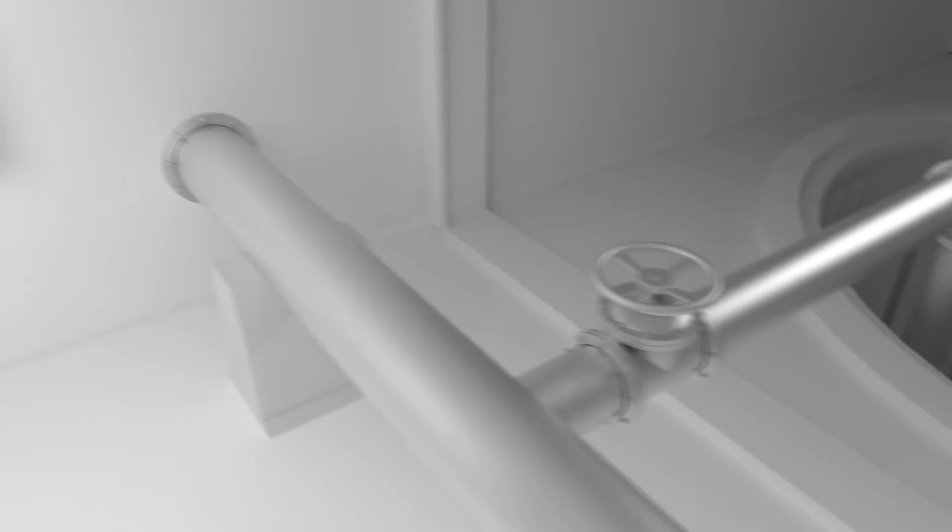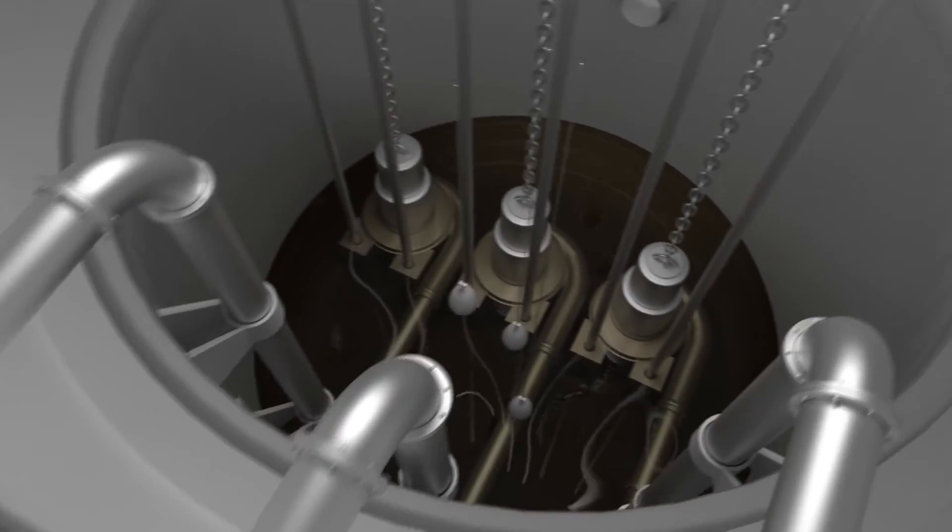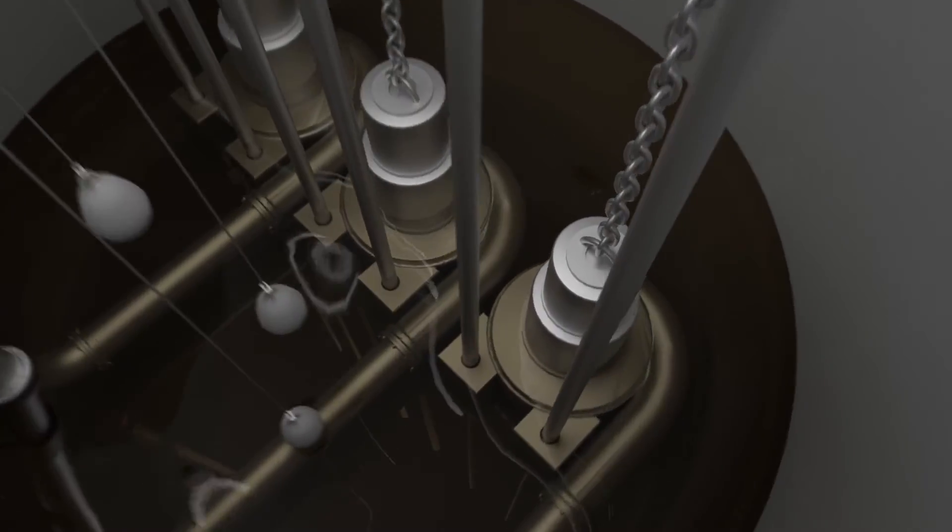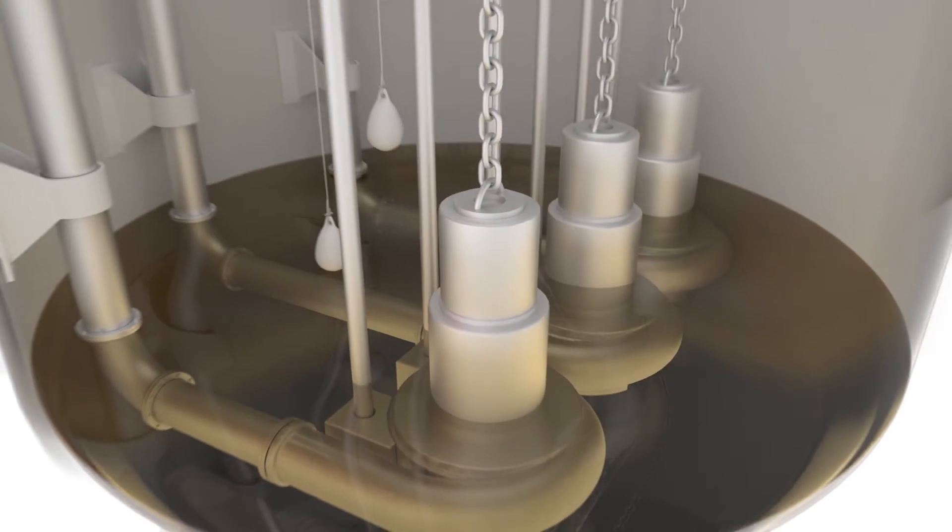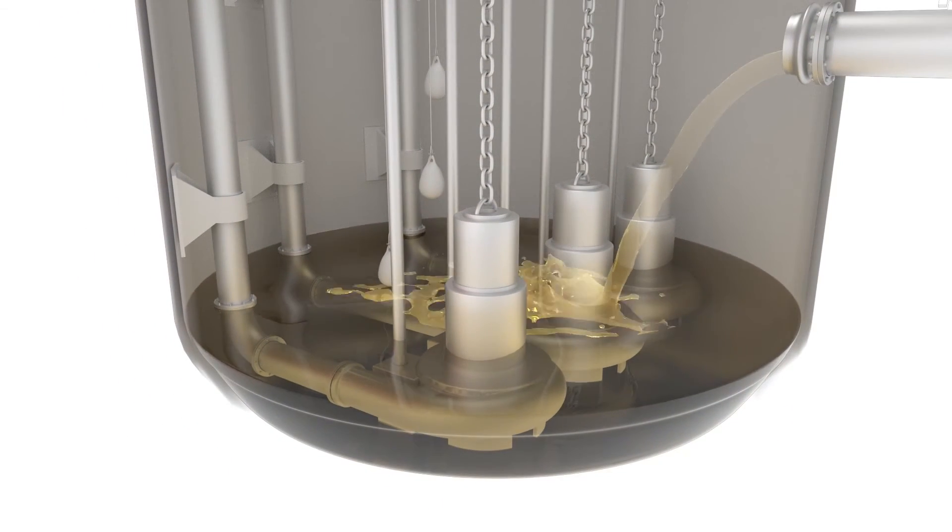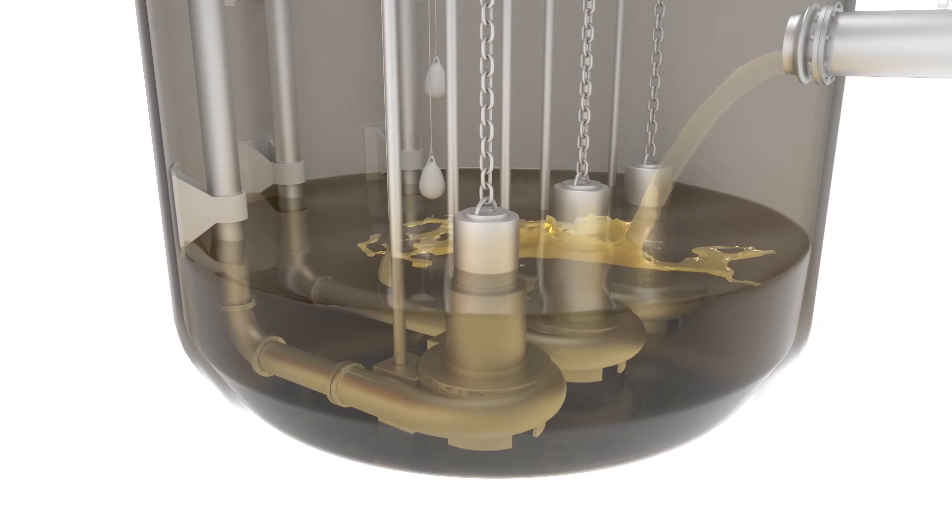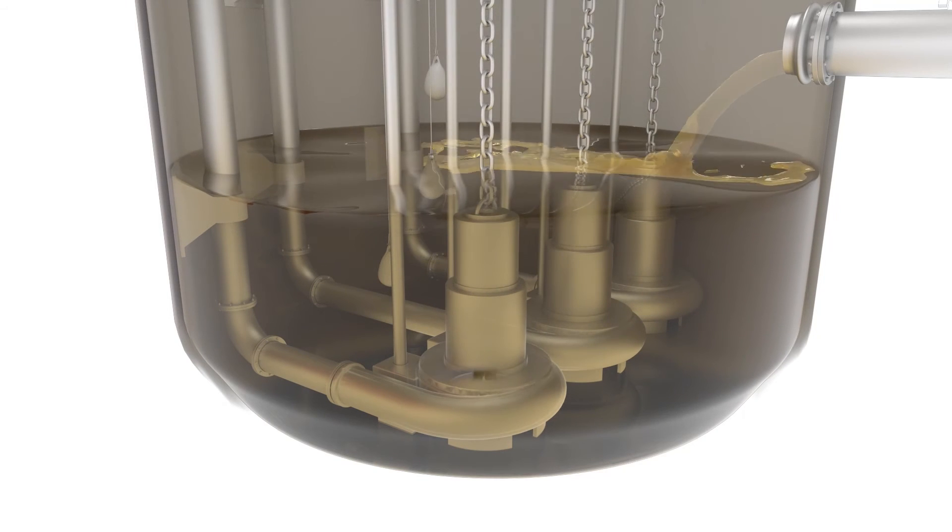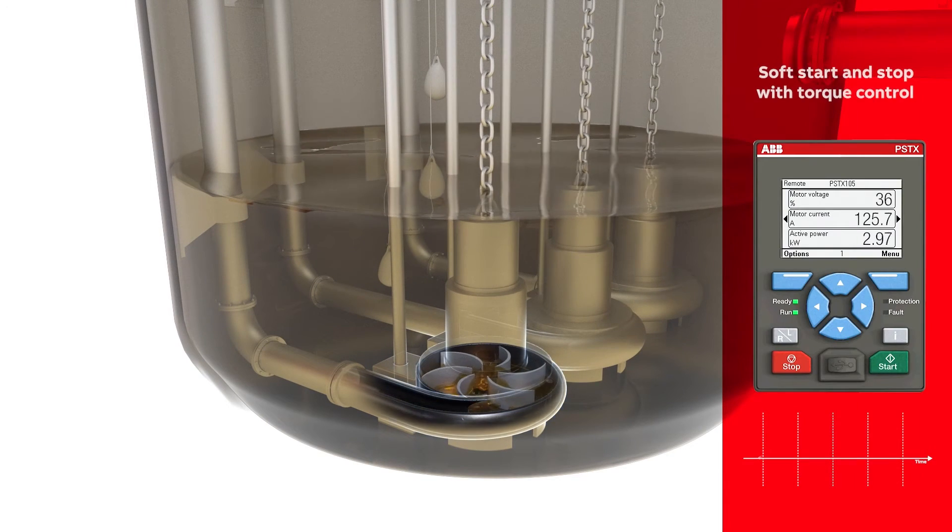A common cause of leakage are pipe bursts resulting from pressure transients. These occur when a DOL motor starts or stops rapidly, causing valves to open too fast. A shock wave is sent through the system, exerting extra pressure on piping and pumps.